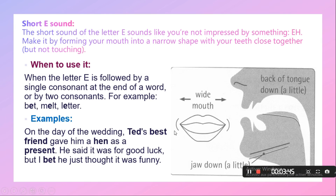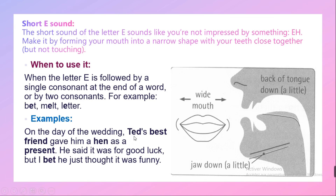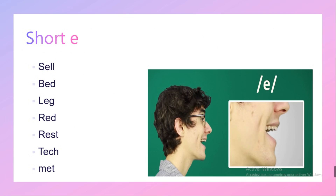Let's see examples: 'On the day of the wedding, Ted's best friend gave him a hen as a present. He said it was for good luck, but I bet he just thought it was funny.' Ted, best, friend, hand, present, bet — don't forget to practice. Repeat after me: Ted, best, friend, hand, present, bet.